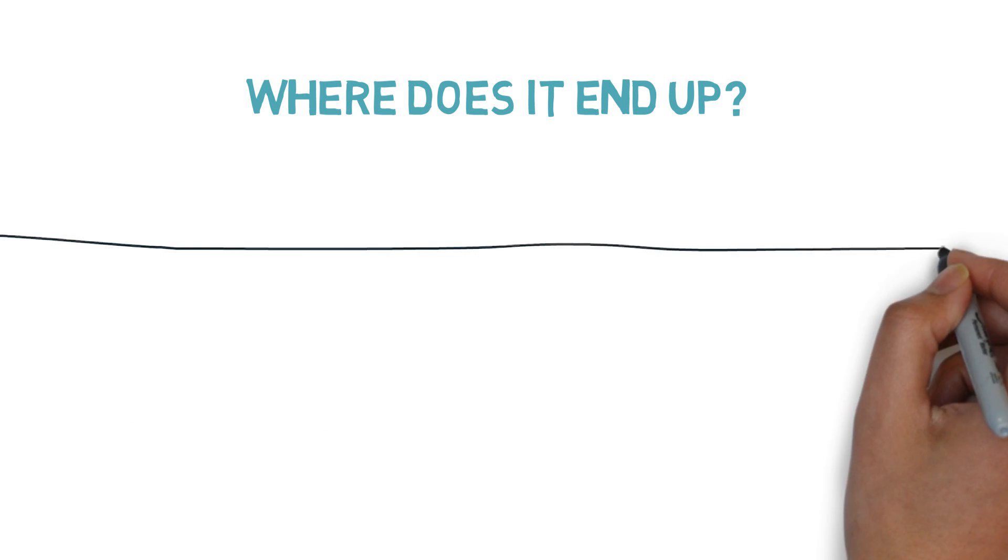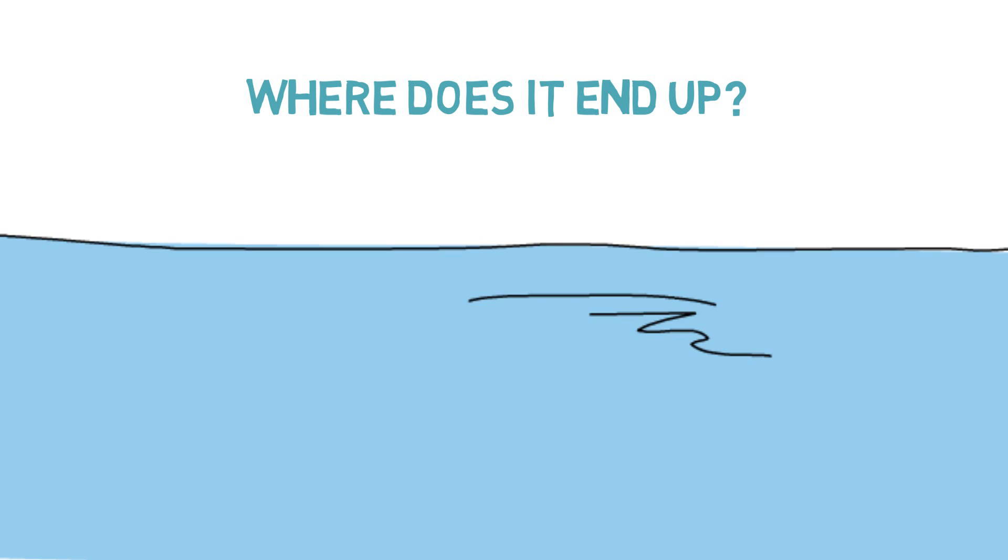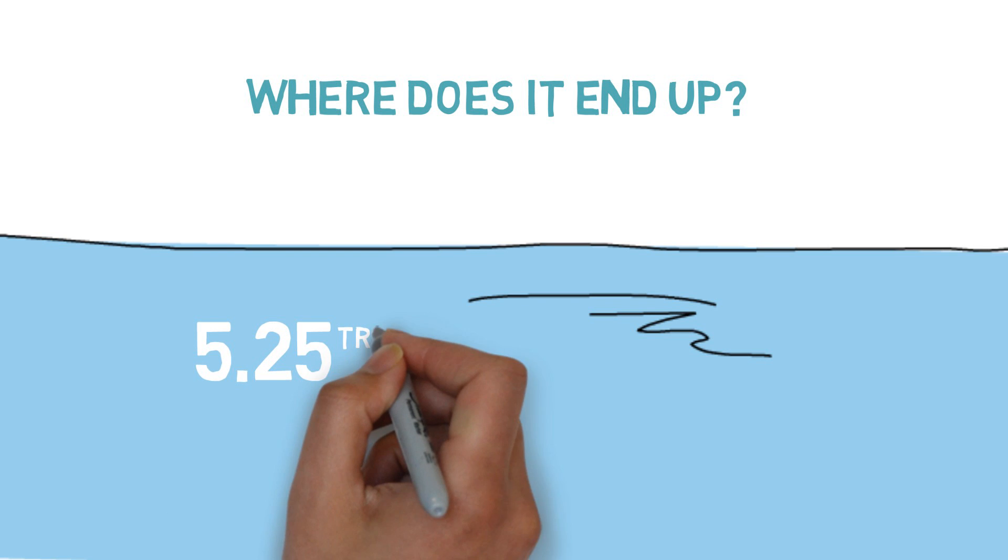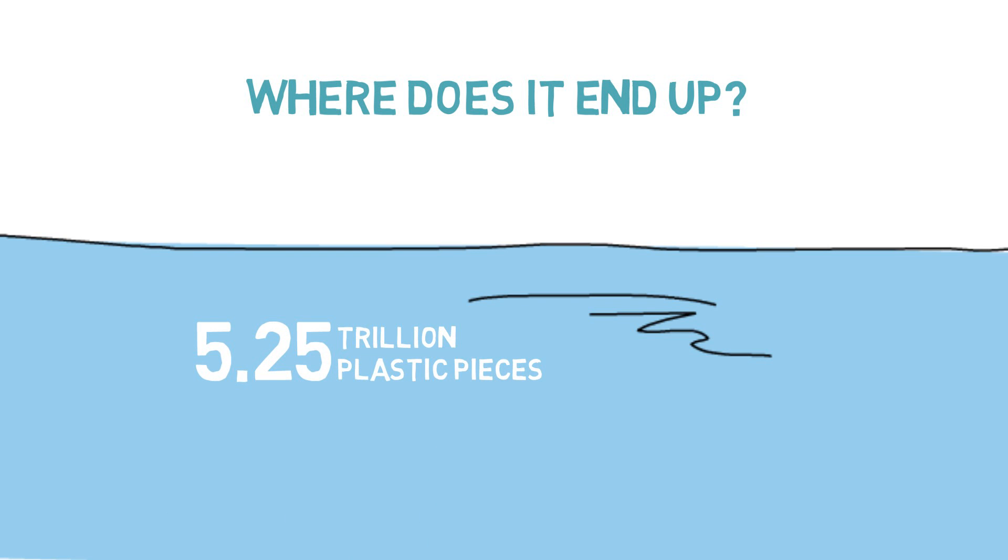Most of the plastic waste ends up into the ocean. There is an estimated amount of 5.25 trillion plastic pieces in the ocean and 8 million tons of plastic are added per year.